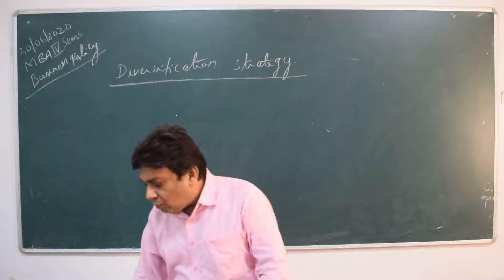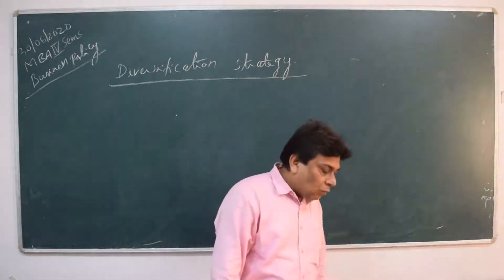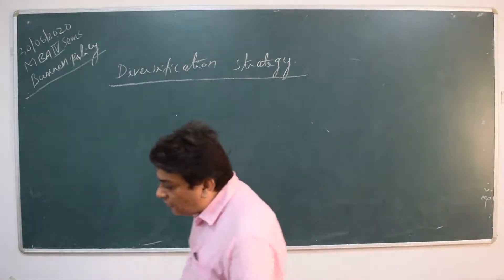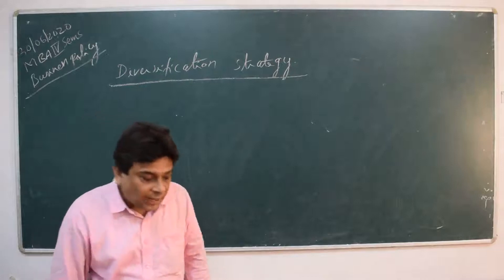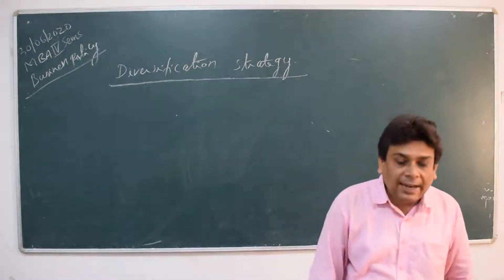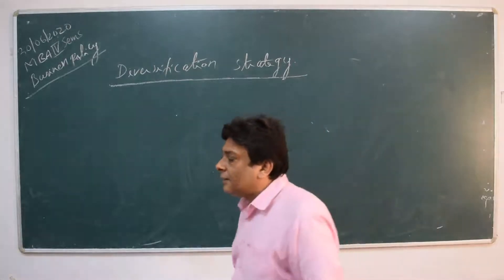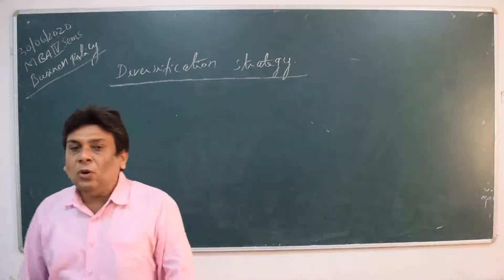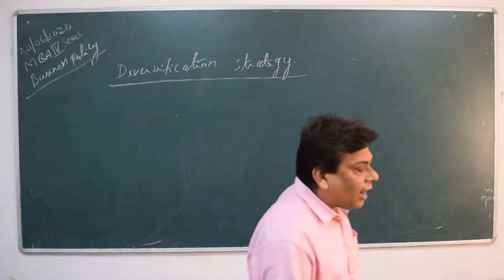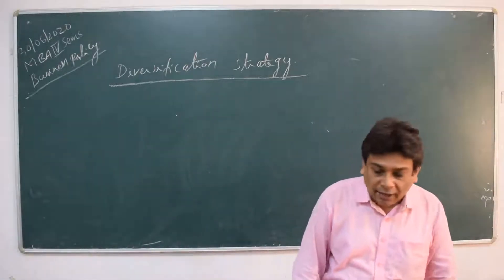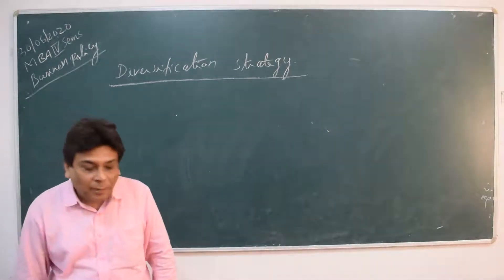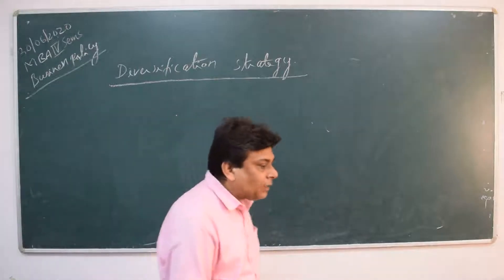To understand diversification strategy, we need to understand the Ansoff product-market matrix. In the Ansoff product-market matrix, when new products are manufactured for new markets, then diversification takes place.